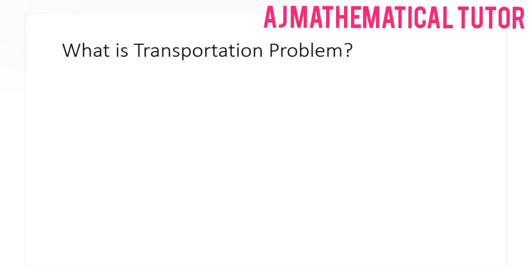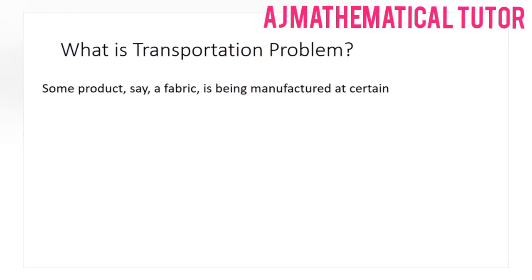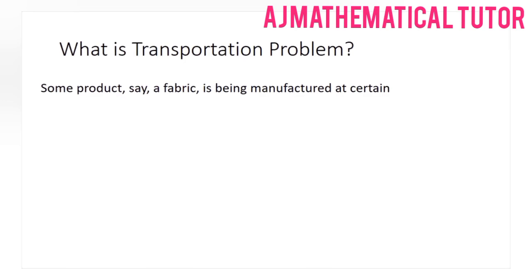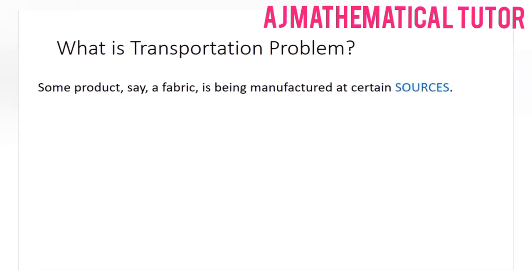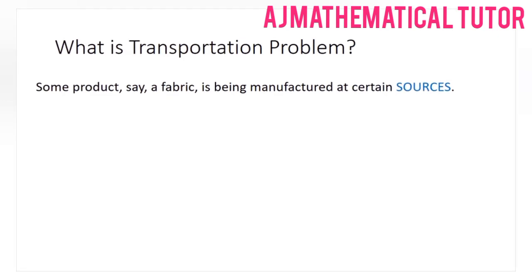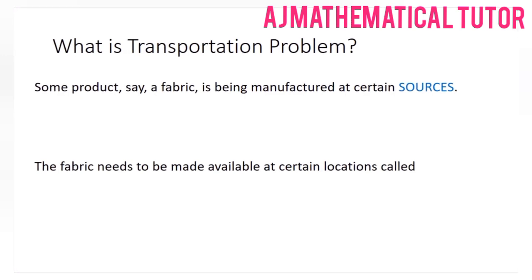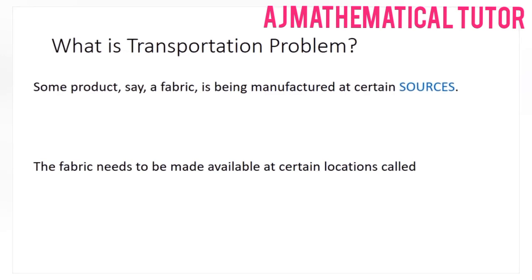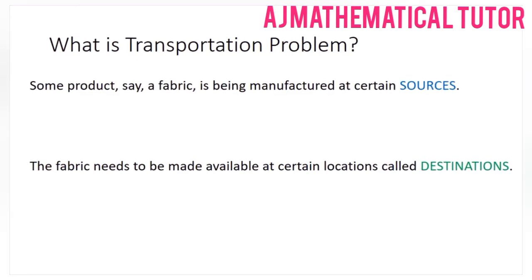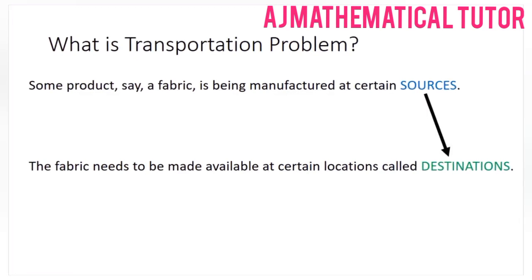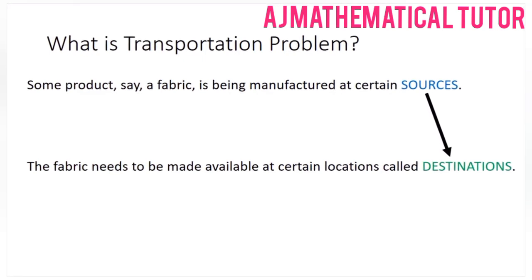A transportation problem: suppose we have a certain product, for example a fabric, which is being manufactured at certain locations. These locations are called sources, and the same product needs to be made available at certain other locations which are called destinations. The fabric needs to be transported from the sources to the destinations so that the requirement at each destination can be fulfilled.